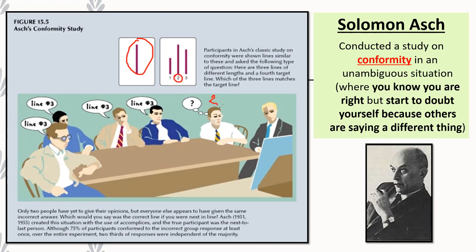You want to say the correct answer is number two, but everyone else in the group is saying line number three. Then it comes to you — are you going to conform and match your answer to the group? Or are you going to stick to your guns and say you believe the answer is number two? That's essentially the basic idea of Asch's entire study.